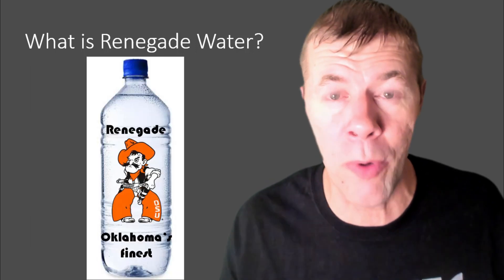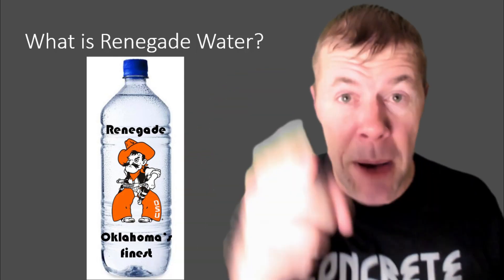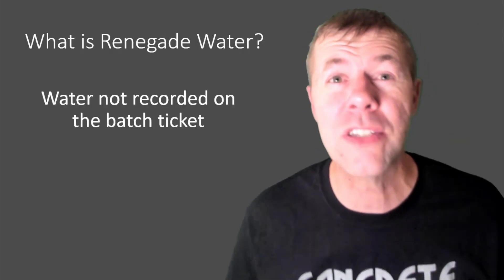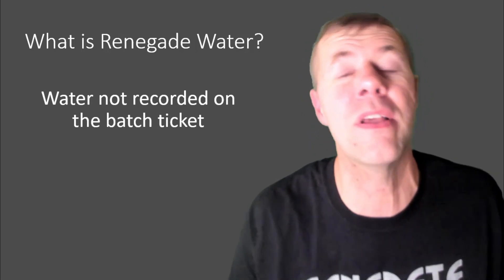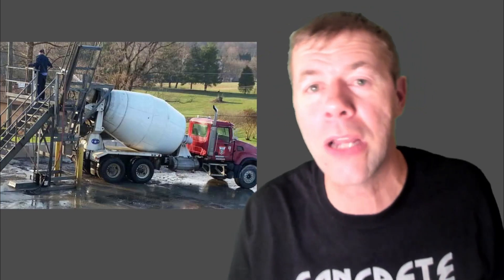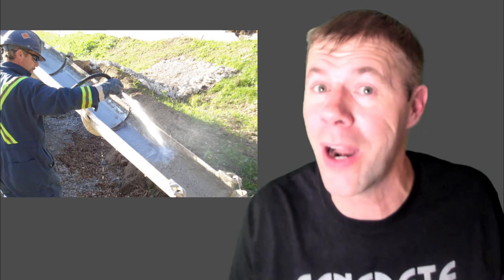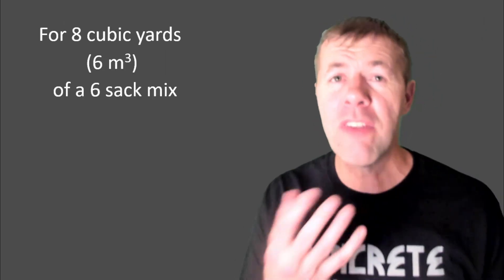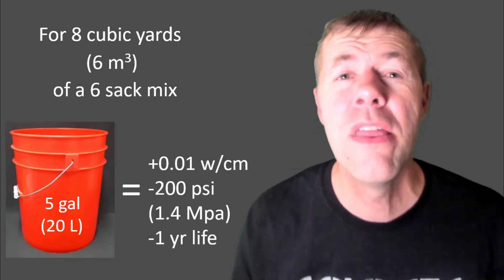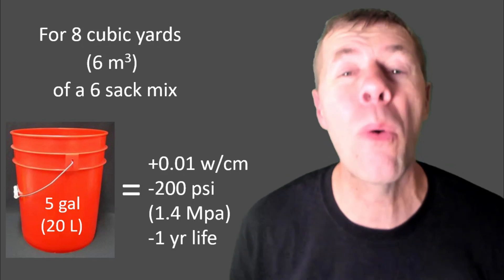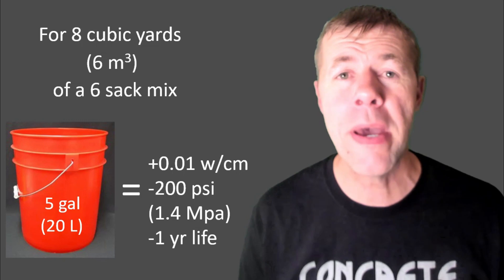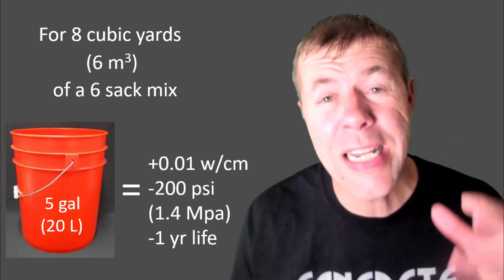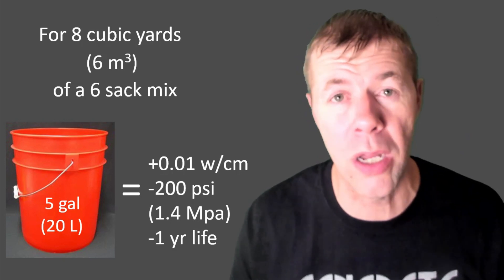What is renegade water? Well, actually, if you look it up, it's like water from a renegade, right? And that is my favorite renegade right there. Oklahoma's finest Pistol Pete, mascot of my Oklahoma State University Cowboys. Yeah, go Pistol Pete. Seriously, renegade water, that's just water that's not recorded on the batch ticket. That's just water that finds its way into the mixture. Like, maybe at the wash down rack, or maybe somebody adds it at the job site because, why not add 10 gallons? And so, how much extra water really matters out there? Well, if you have an eight cubic yard mixture and it is about a six-sack mix, then a five-gallon addition, or 20 liters or so, is a 0.01 water-to-cement ratio change. That's 200 PSI, 1.4 megapascals, or about one year of life, at least in Oklahoma City, Oklahoma, if you're worried about corrosion. Yeah, you are degrading the life of the concrete as you add water to it, as well as degrading the strength.